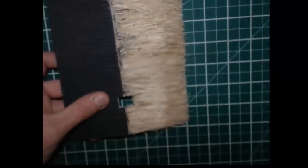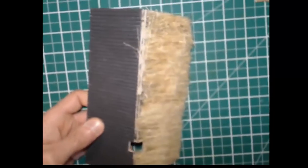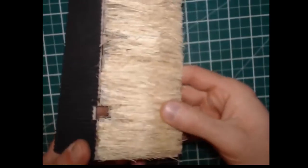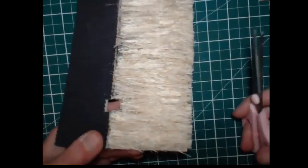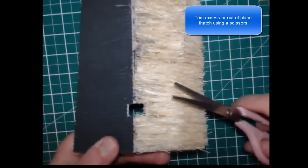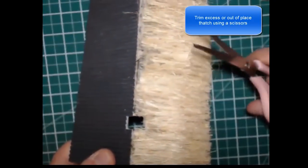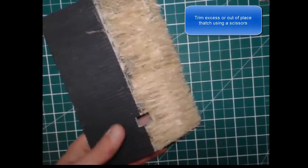When it is all finished and dried then what we do is we will just come along with our scissors and any bits that are sticking up we can just cut them with the scissors and trim them off.